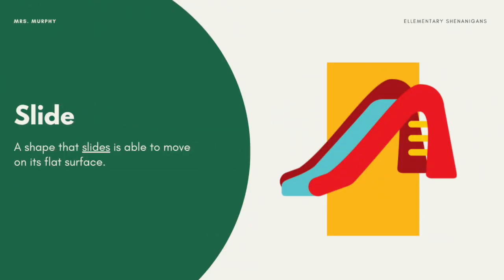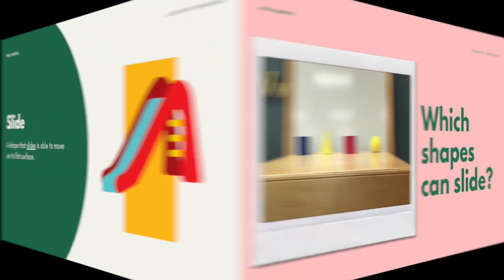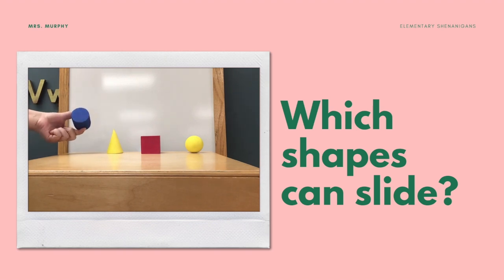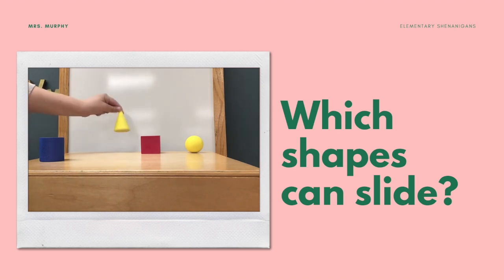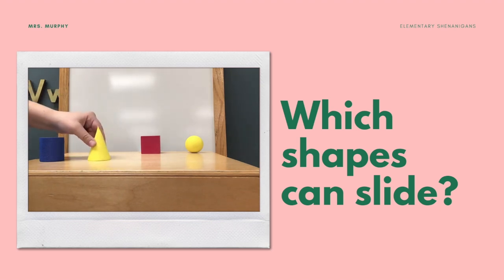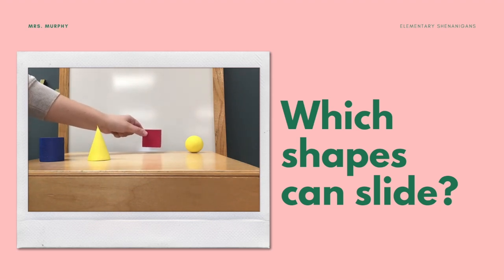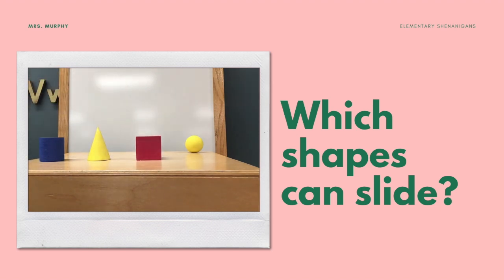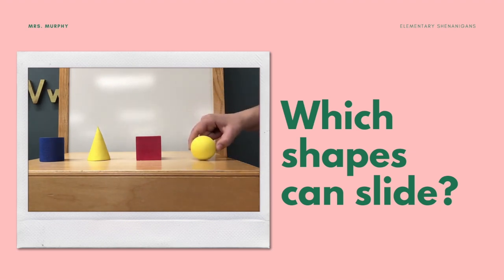Let's start by investigating which shapes can slide. A shape that slides is able to move on its flat surface. Let's test our 3D shapes to see which ones can slide. The cylinder has two flat surfaces — it can slide. The cone has one flat surface — it can slide. Do you think the cube will be able to slide? Yes, it has six surfaces — it can slide. The sphere does not have any flat surfaces, so it cannot slide.